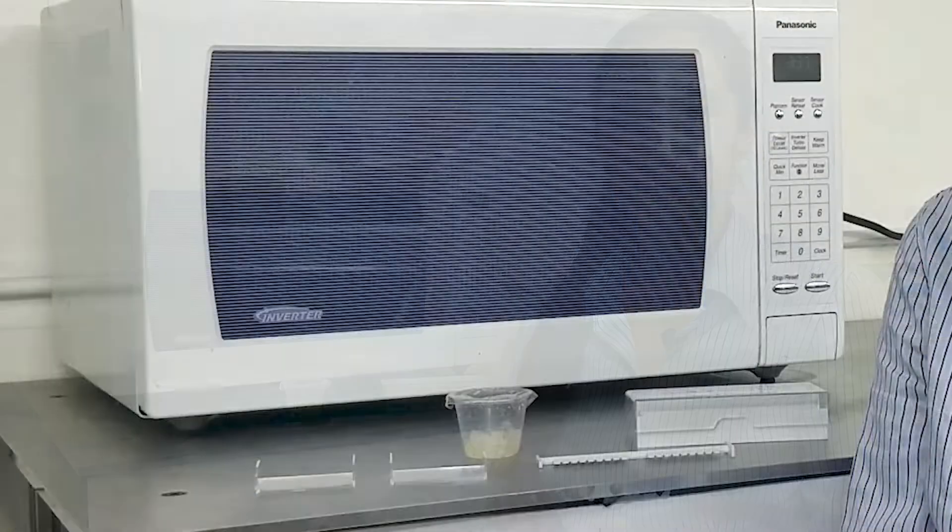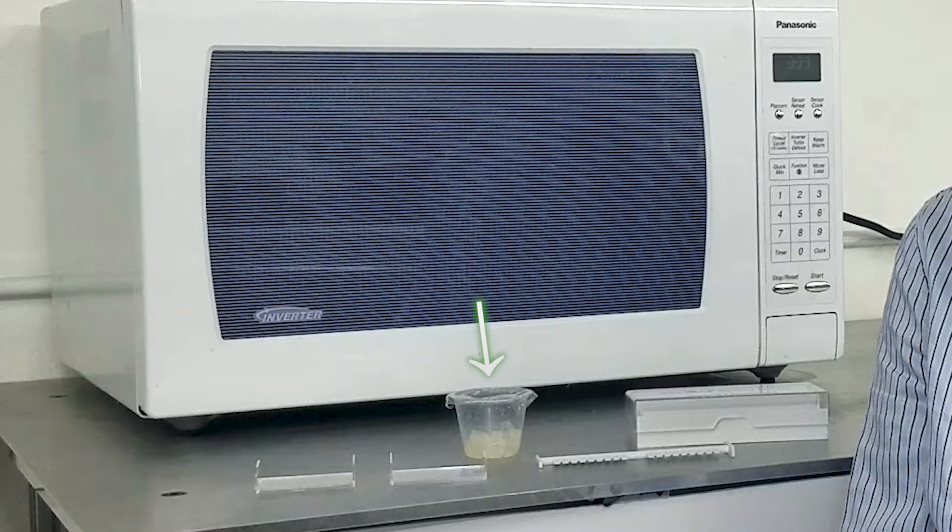We'll be demonstrating how to make agarose gels using the Mini 1 electrophoresis system. You will need a gel green cup, a microwave, casting stand complete with gel casting trays and combs, and a paper towel.